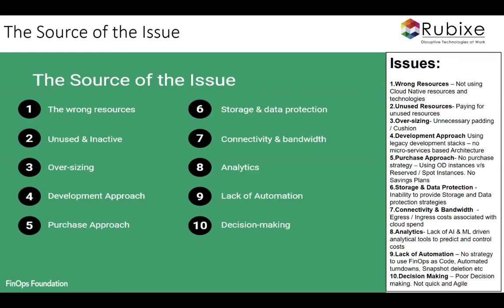Another issue is the use of old technology. Today there are newer coding frameworks and technologies — especially microservices — which are best suited for cloud-based development and architecture. A microservices-based architecture is agile and lean; the way you call your front-end and back-end applications is so optimized that there's no room for wrong resources, unused resources, or oversizing. People forget to adopt this approach, and that causes the issue of overspending.